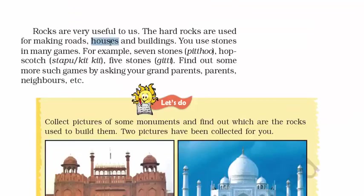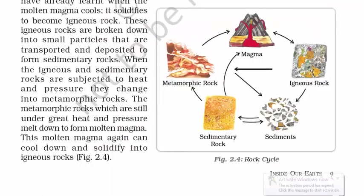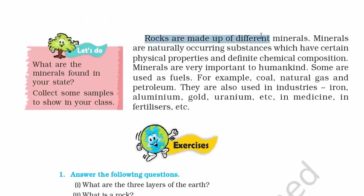Rocks are very useful to us. Hard rocks are used for making roads, houses, and buildings, and historically rocks have had great usage as well. There is also a term called the rock cycle — it refers to the changes that a rock goes through from time to time. You can see how sedimentary rock turns into metamorphic, and then into igneous rock, and back into sediment — a whole cycle. So igneous, sedimentary, and metamorphic rocks all combined make up the rock cycle.